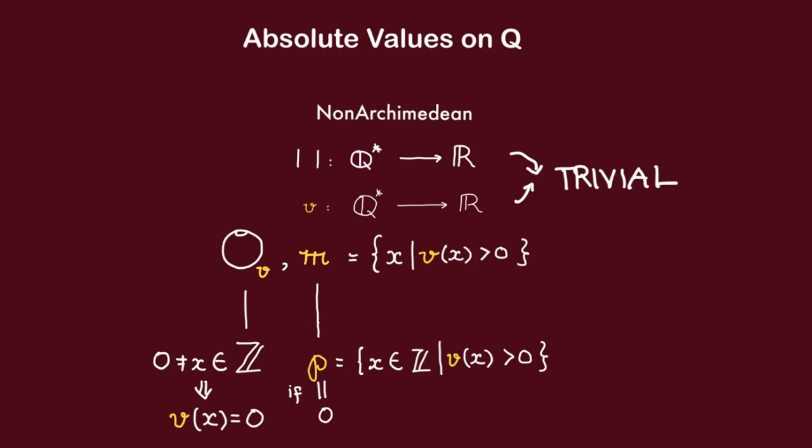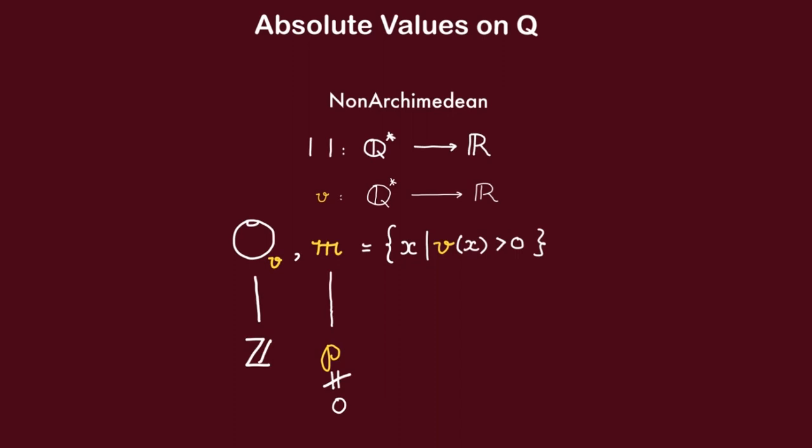Well, technically, I forgot to make that assumption, but let's act as if we did assume that these valuation and absolute value are non-trivial. With that assumption, we now have that this prime ideal here lying below M must be non-zero, and thus it must be generated by some prime number, say P.